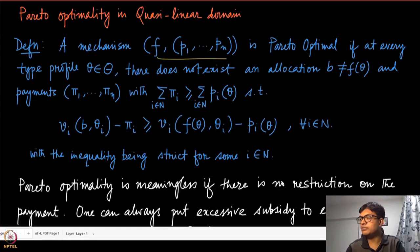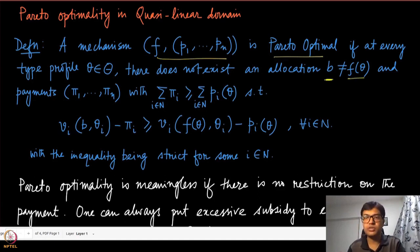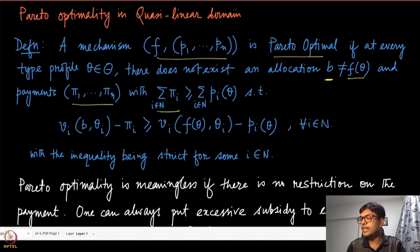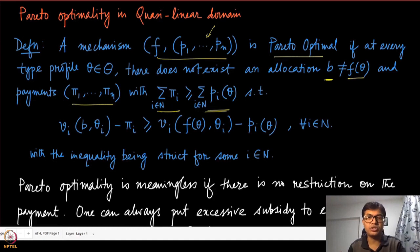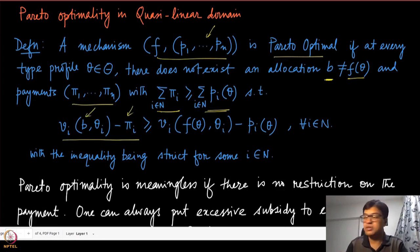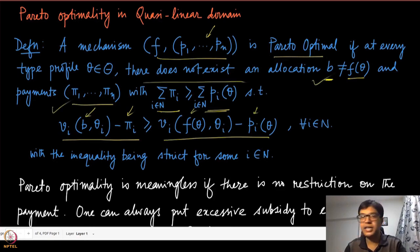We are going to call a mechanism in the Quasilinear domain to be Pareto-Optimal if for every type profile the following happens: there does not exist any allocation different from F(θ) and a set of payments π₁ to πN, with the additional condition that this payment is at least as much as the payment of the original mechanism, such that the utility under that allocation and payment is at least as much as the utility under mechanism F, P. If there does not exist any such allocation and payments, we call it Pareto-Optimal — you cannot make it weakly better for all players and strictly better for at least one.